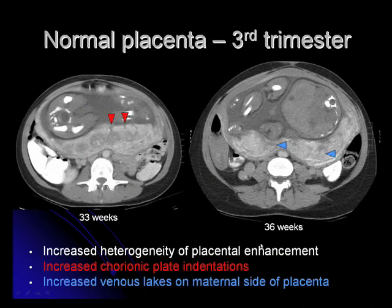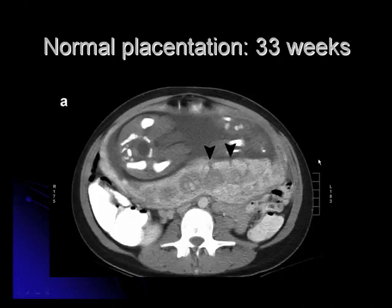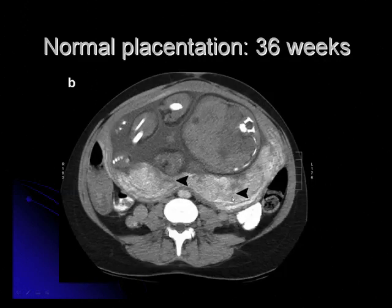These are some images demonstrating the normal appearance of the placenta during the third trimester. At 33 weeks, the CT scan shows increased heterogeneity of the placenta compared with the second trimester, as well as the formation of chorionic plate indentations on the fetal side of the placenta. Also, there are increased venous lakes on the maternal side of the placenta, shown as hypodense areas within the placenta. These are blow-up images of the chorionic plate indentations and the venous lakes. These are all part of normal placental development.